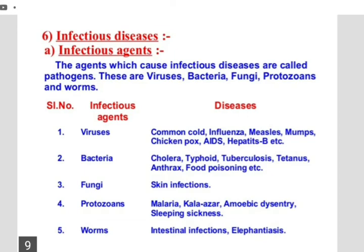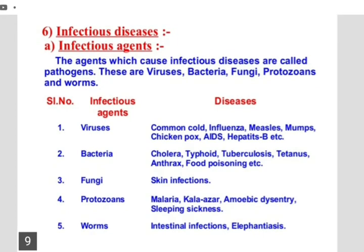Based on differences in characteristics among members of different groups, and similarities among members of the same group, doctors can design control measures against them. For example, a drug which blocks life processes in one member of a group will generally be effective against other members of the same group, but not effective against members of another group.